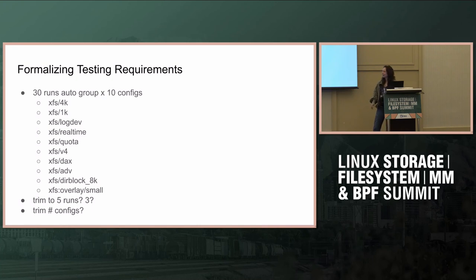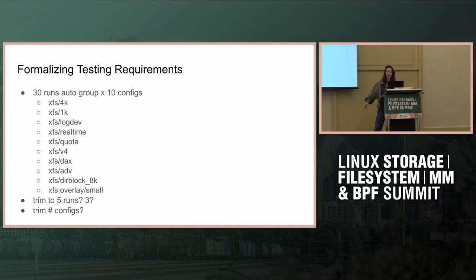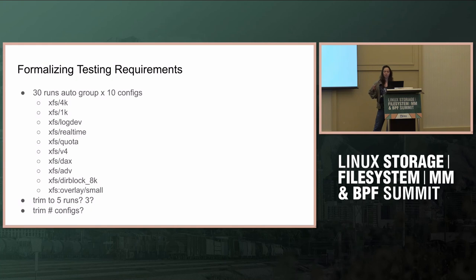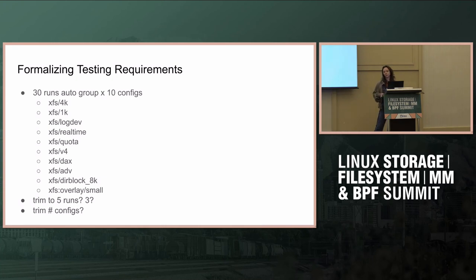On formalizing test requirements: currently I run 30 runs of the auto group on 10 different configs. In the beginning I got a list from Derek about a bunch of different configs he suggested running. The 30 runs was excessive but it was to get the ball rolling and get everyone agreeing on the process in general. Since things are going well now, I'd like to ask if anyone opposes cutting that down to five runs or maybe three runs. I prefer wider spread of configs with fewer runs per config, since the problems I've seen have been hard failures that are very obvious. How many times did you find a problem after 30 runs? Maybe once, across all of the backporting — so not often.